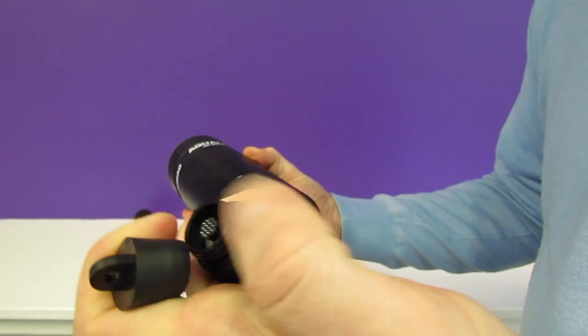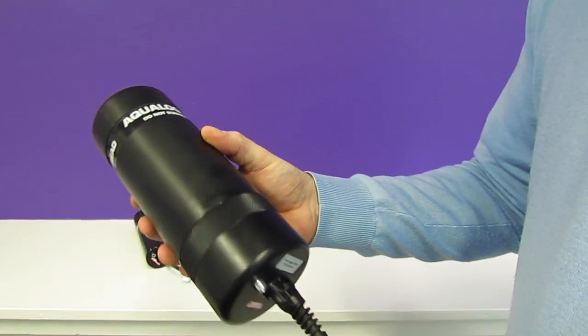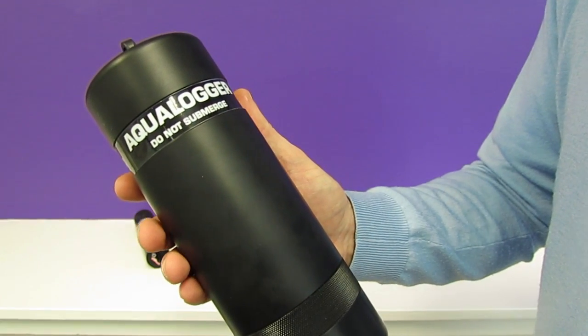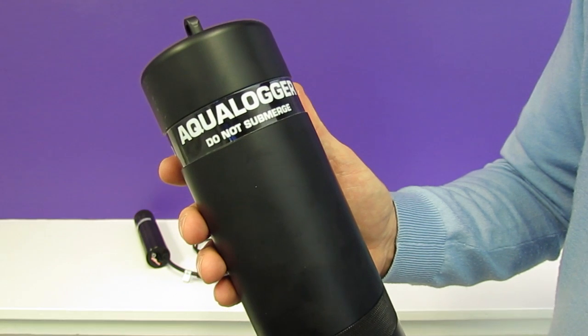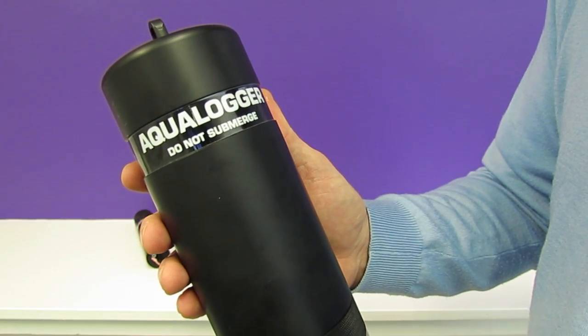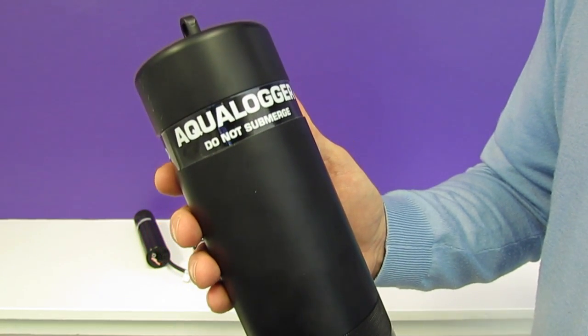This allows you to connect our aqua probes and their extension cables. As I mentioned before, this logger is designed to work with the AP 7000. The AP 7000 is our probe designed for long term deployments because this probe features a self-cleaning system.